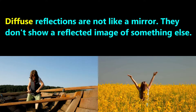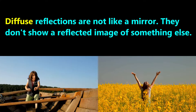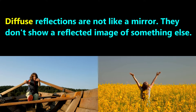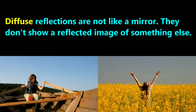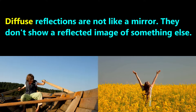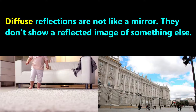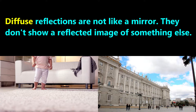In contrast, if an object can't create a clear image of another object, we see a diffuse reflection of sunlight or other light sources from that object. Diffuse reflections are common on objects that are not polished and have a rough surface.